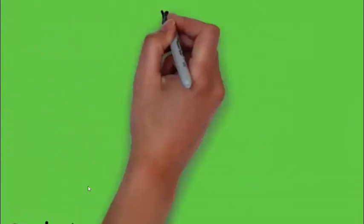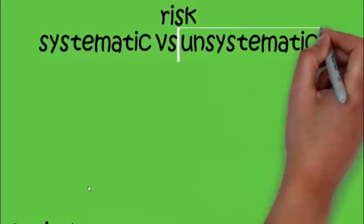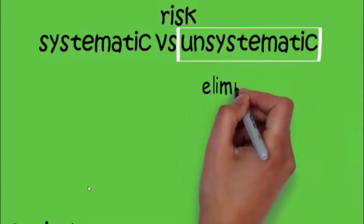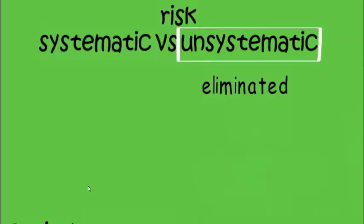In this video we are going to discuss the Capital Asset Pricing Model, that is CAPM. But before discussing CAPM, let's first discuss systematic risk versus unsystematic risk. Unsystematic risk is due to micro factors and can be completely eliminated.